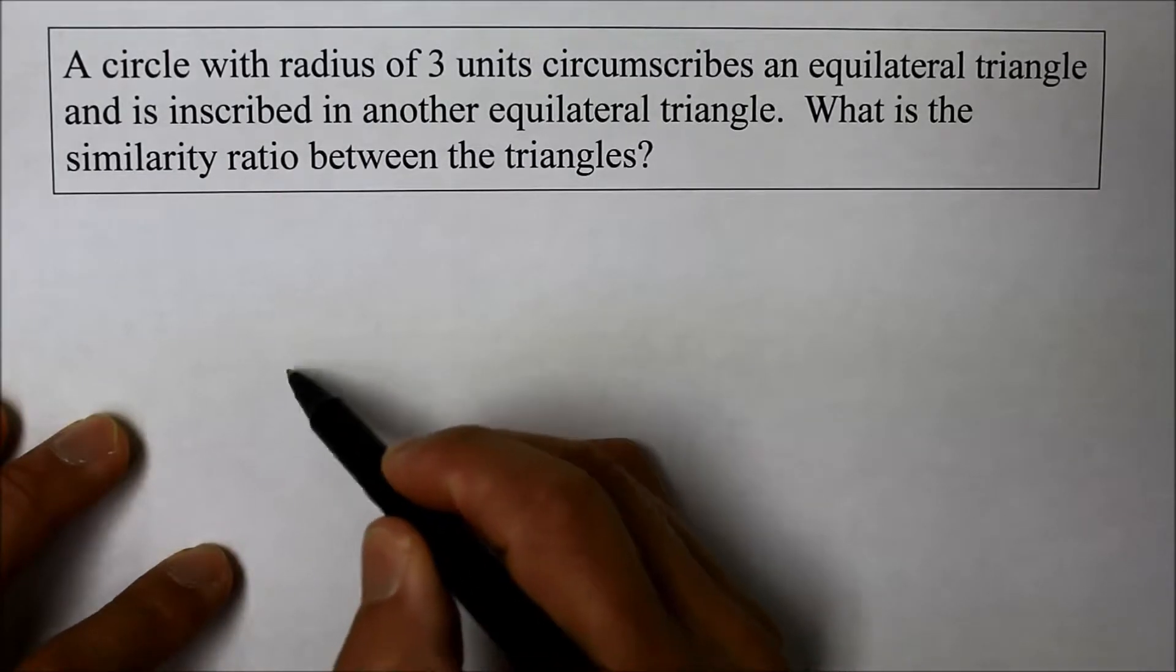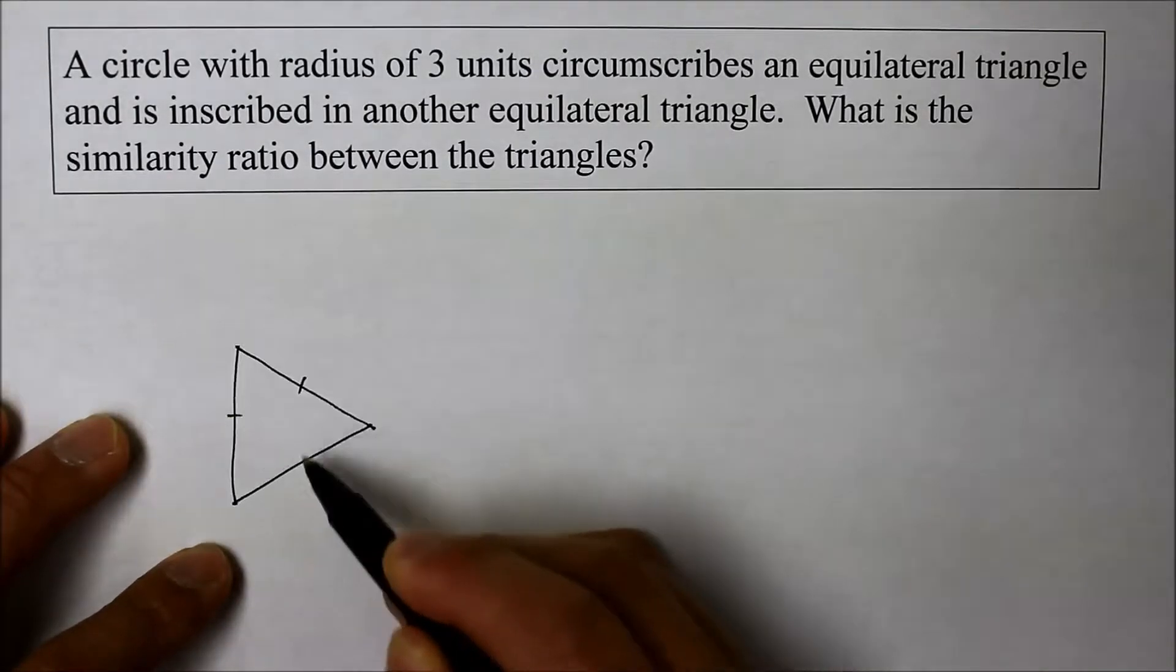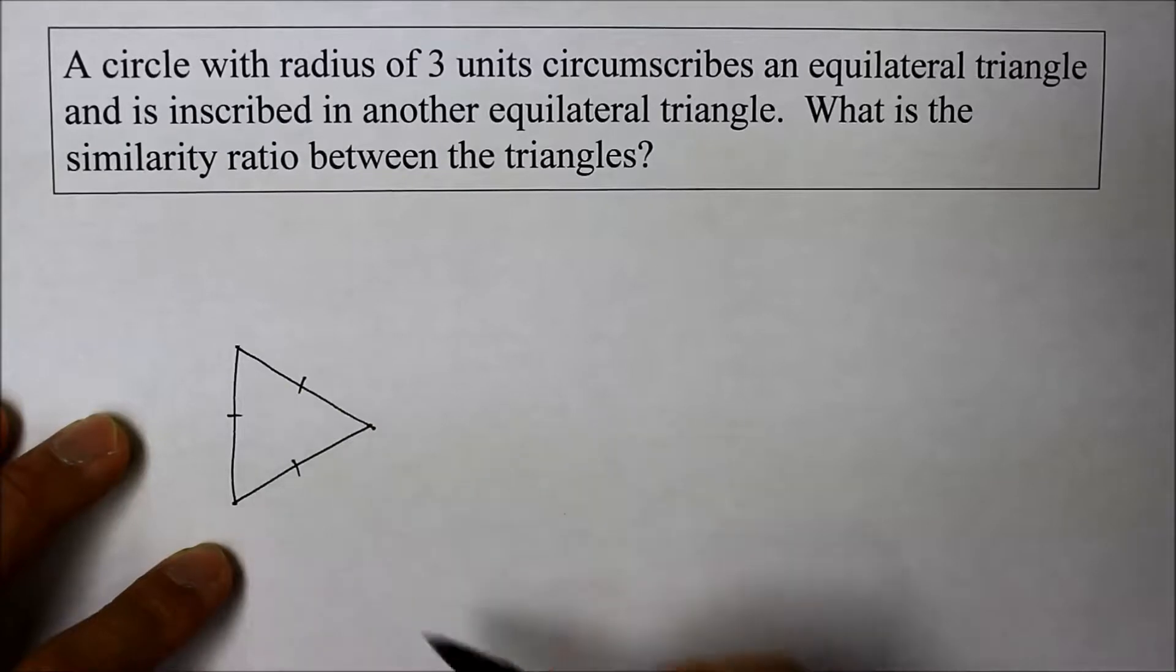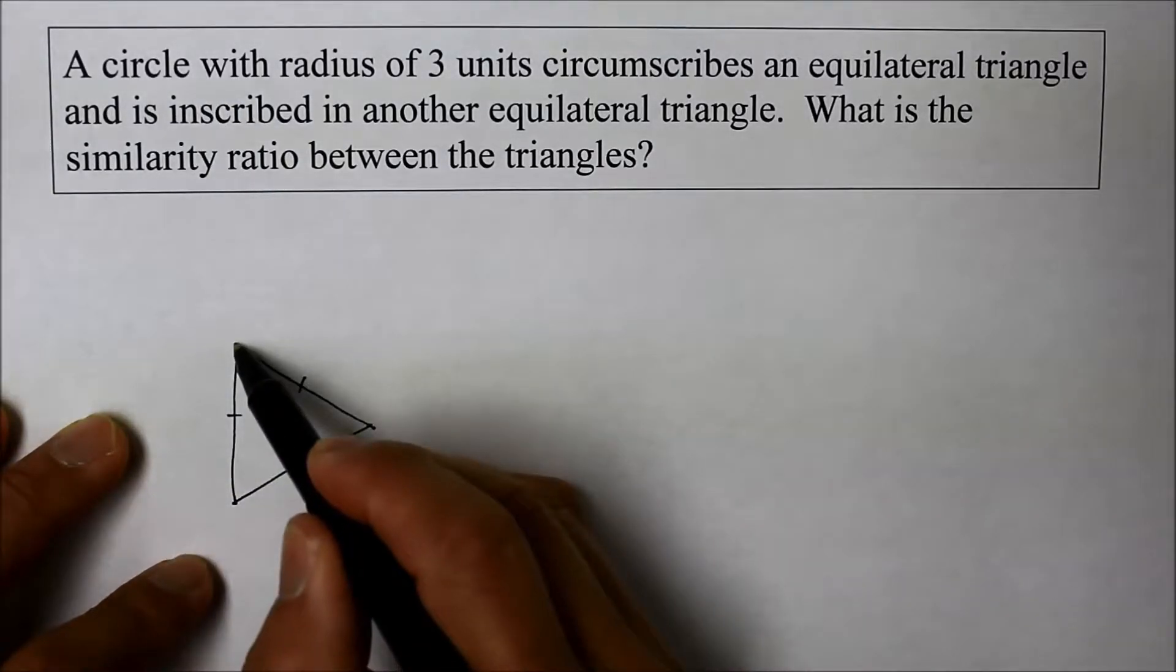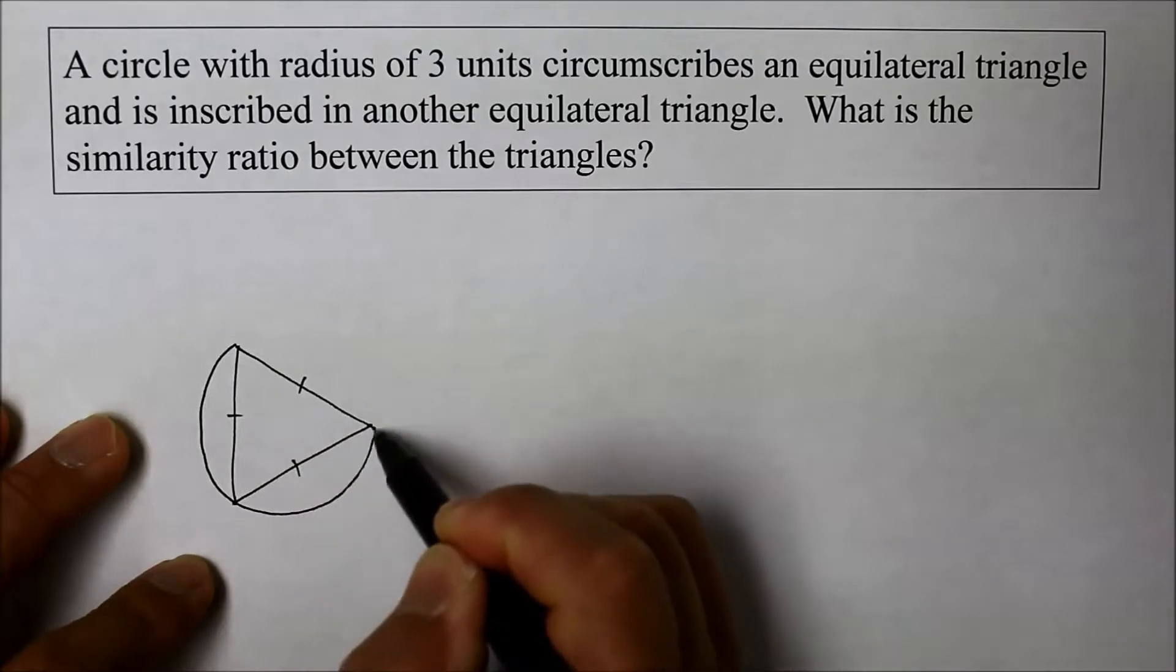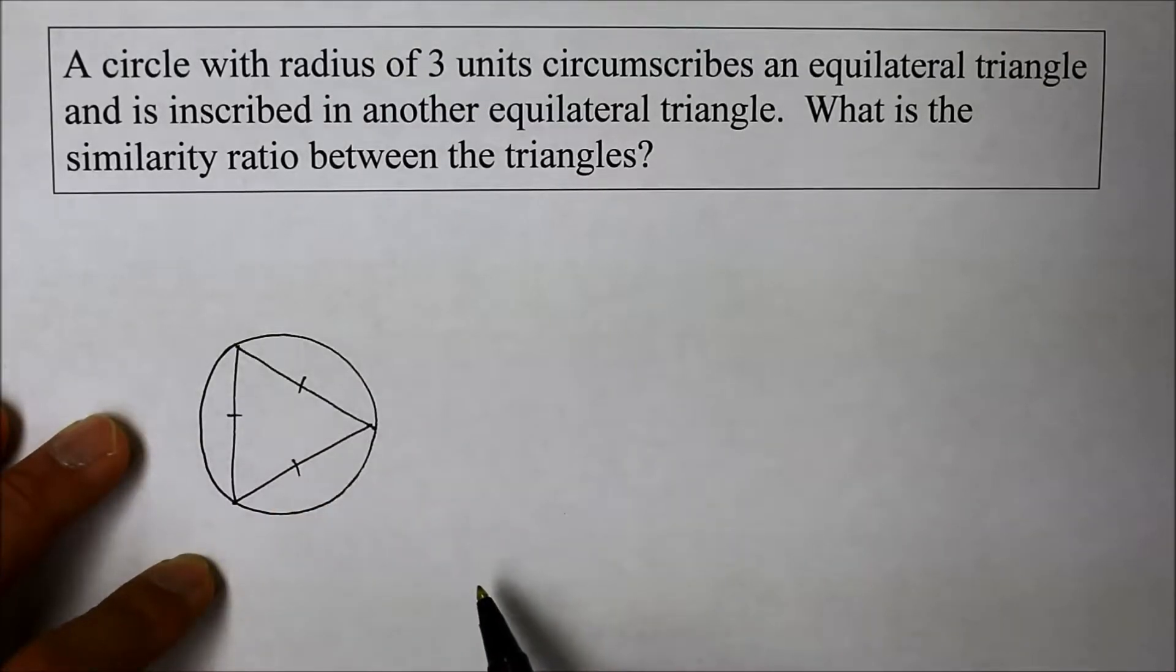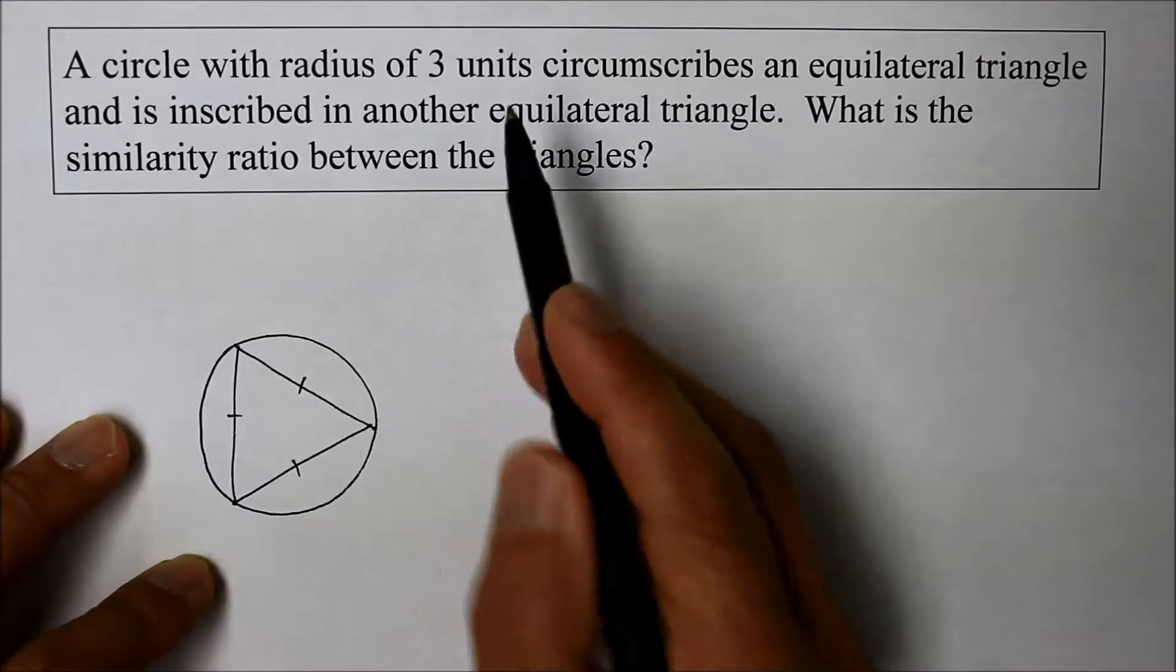All right, so let's draw that. Here's an equilateral triangle, three congruent sides, three congruent angles. And it's a circle that circumscribes it. So here's, I'll do my best over here. Here's a circle. And the radius is three units.